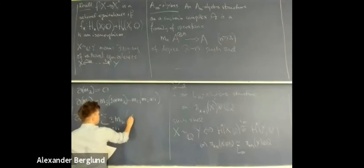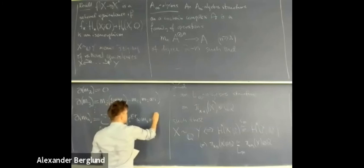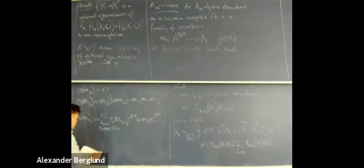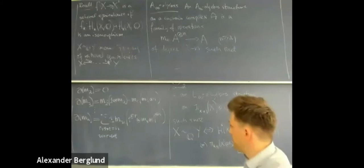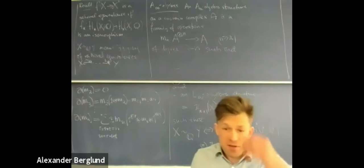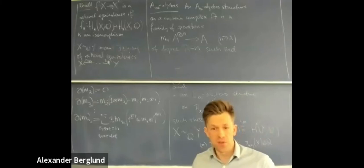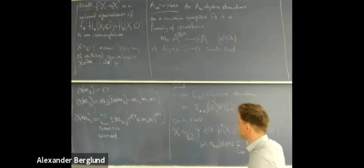This is the start of a resolution of the associativity operad, and the higher m's take care of the higher coherences in the resolution. There's an explicit formula: you compose the operations in all ways, and that's the differential of m_n. This definition can be found in, for instance, Bernhard Keller's introduction to A-infinity algebras, which is an excellent reference. I will be following his conventions.